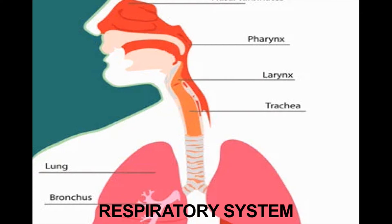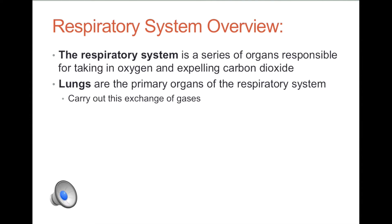The human body needs oxygen to sustain itself. Without it, our brain cells will begin to die, which would ultimately lead to death. The respiratory system is a series of organs responsible for taking in oxygen and expelling carbon dioxide. The primary organs of the respiratory system are the lungs, which carry out this exchange of gases.